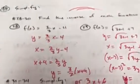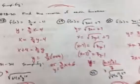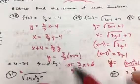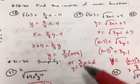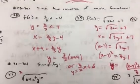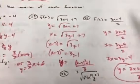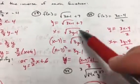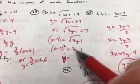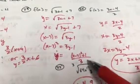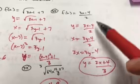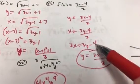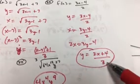To find the inverse: f(x) is the same as y, so rewrite as y equals, then do a wife swap — interchange x and y — and solve for y. For number 29, interchange x and y, subtract 7 from both sides, square both sides, then add 1 and divide by 3. On number 30, interchange x and y, multiply both sides by 2, add 4, then divide by 3.